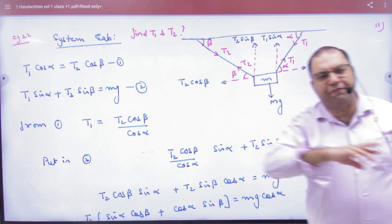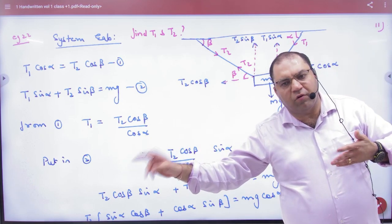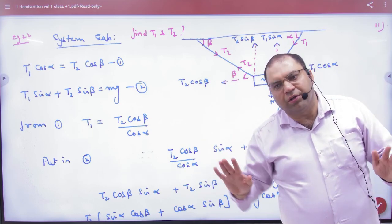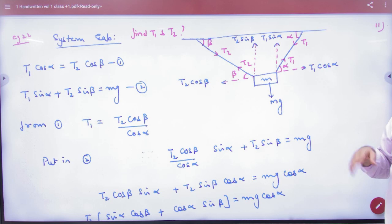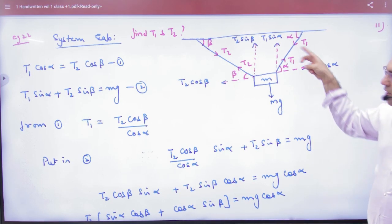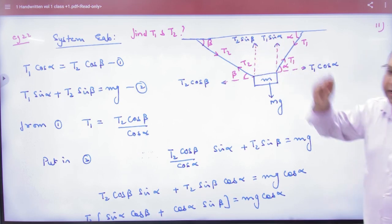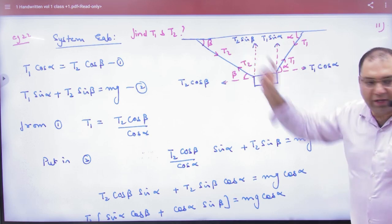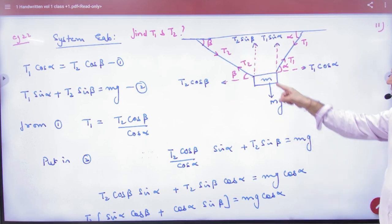What does equilibrium mean? Left force is equal to right force and upper force is equal to lower force. Now, because there are two strings, the tension will be two-two. So let us suppose, here is T1-T1 and here is T2-T2. Because the angle is different, so the weight is mg.